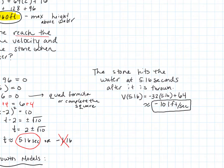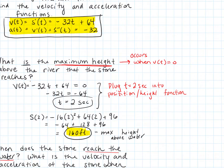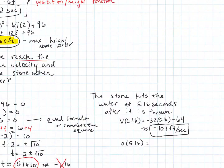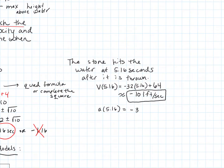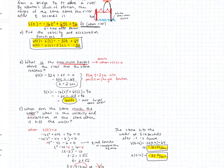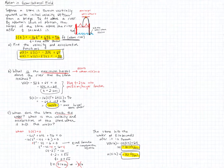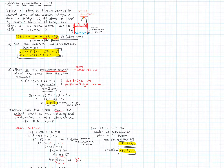As for the acceleration at 5.16 seconds, remember that acceleration is constant throughout this trajectory. The acceleration was just negative 32 feet per second squared — it doesn't matter what time it is, the acceleration is always the same. That's the rate of change in velocity per unit time: feet per second per second, which becomes feet per second squared. That concludes our exploration of Newton's laws of motion looking at max height, velocity, and acceleration for this stone's throw.